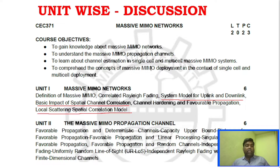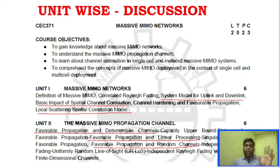Unit 2 covers favorable propagation — this is the most important area. Key topics include: favorable propagation and deterministic channel, favorable propagation and linear processing, favorable propagation and random channels. Also important is independent Rayleigh fading and uniformly random line of sight (UR-LOS). Unit 2 has the most vast syllabus.